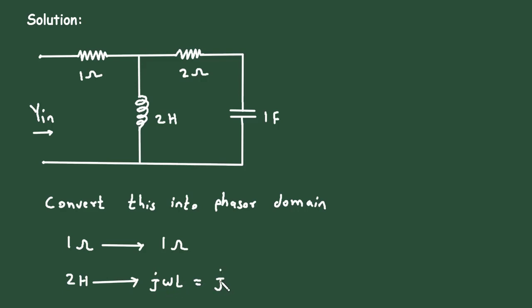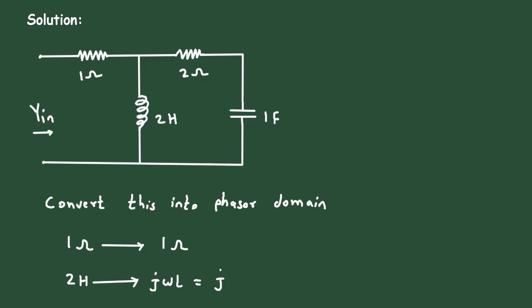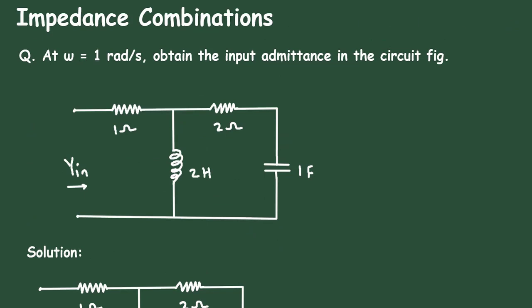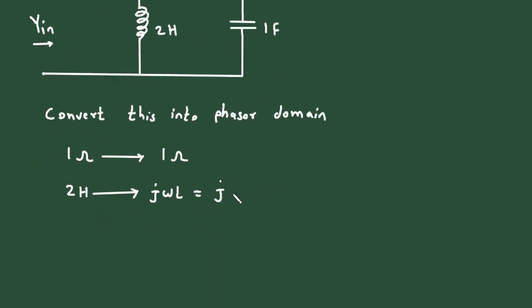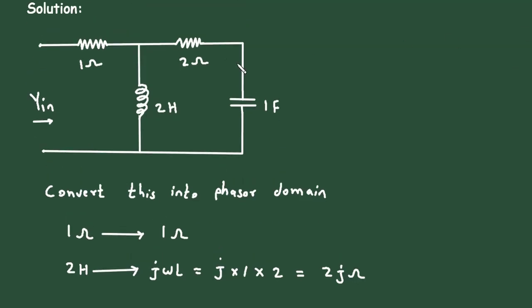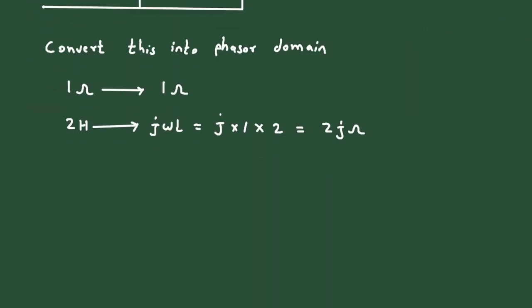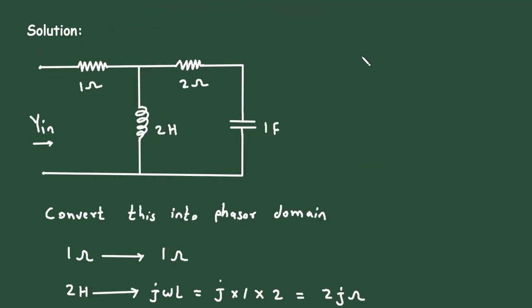The value of j will be j. The value of omega is given, it is 1. So j into 1 into L value is 2. So this will be 2j ohm. And here, the value of resistance is 2 ohm again. So in phasor domain, it will remain same.